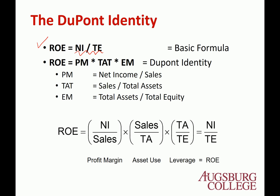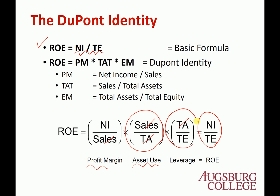There are three components we can actually define. You can change it like: net income divided by sales, multiplied by sales divided by total asset, multiplied by total asset divided by total equity. So these all cancel out, and you have ROE. It means that ROE has three components: the first one is profit margin, second is total asset turnover, and the third one is the equity multiplier.